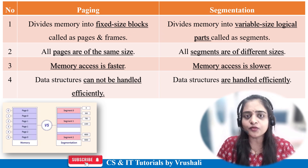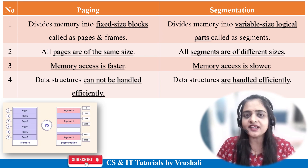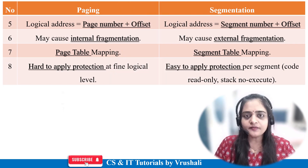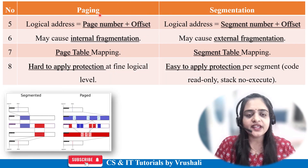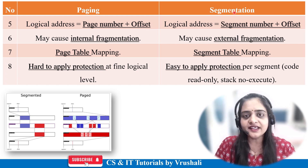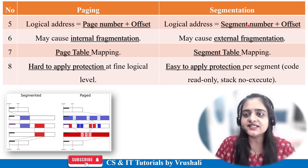Paging does not support any data structure, but segmentation supports the stack segment, code segment, and heap segment — this kind of data structure. The next difference is in how the logical address is calculated. In paging, the formula is: page number plus offset address. In segmentation, the formula for the logical address is: segment number plus offset.